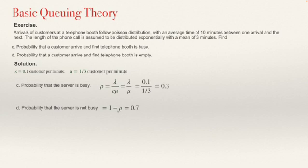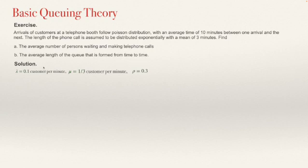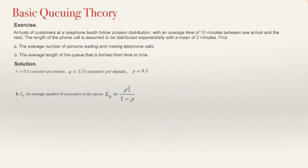Now solving question B: the average number of customers in the queue. We have lambda equals 0.1, mu equals 1/3, and rho equals 0.3. Using L sub-Q equals rho squared divided by 1 minus rho: L sub-Q equals 0.3 squared divided by 1 minus 0.3, which is 0.09 divided by 0.7, giving L sub-Q equals 0.1286 customers.